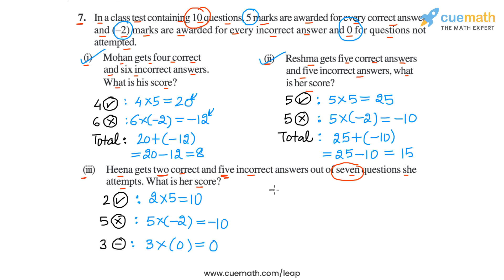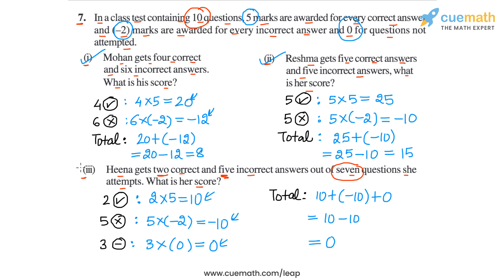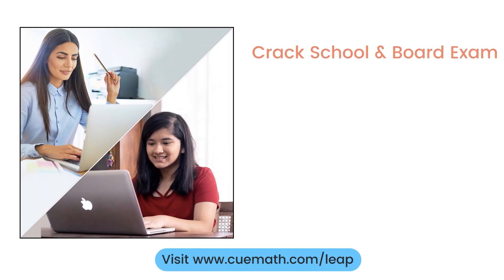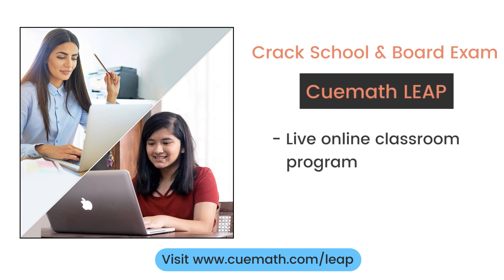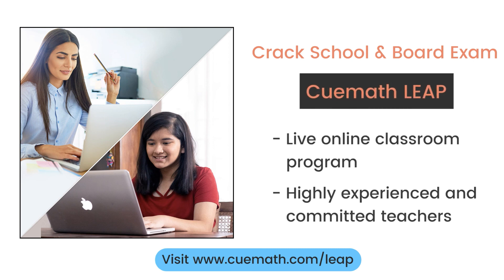Hina's total score is 10 plus minus 10 plus 0, which is 10 minus 10, equal to 0. So the answers are: Mohan's total score is 8, Reshma's total score is 15, and Hina's total score is 0. With this we have completed question number 7. To learn more, explore QMath Leap, a live online classroom program run by highly experienced and committed teachers.